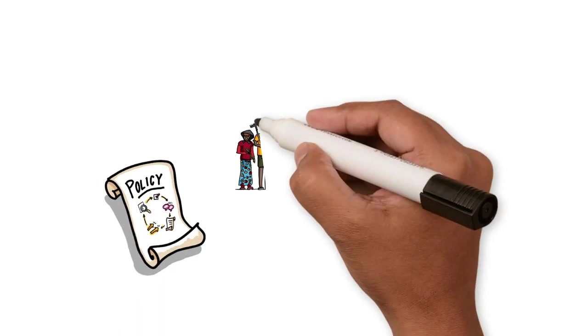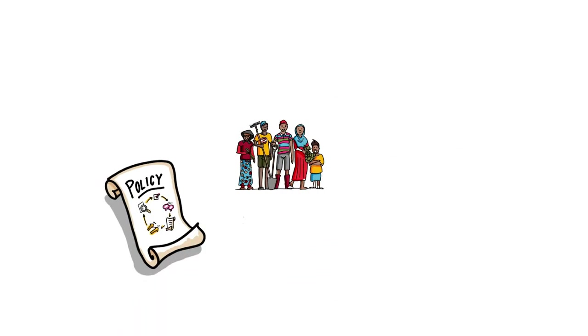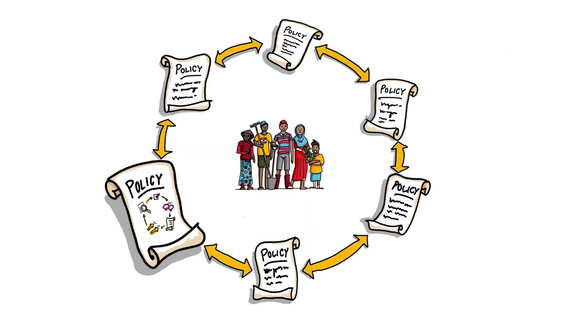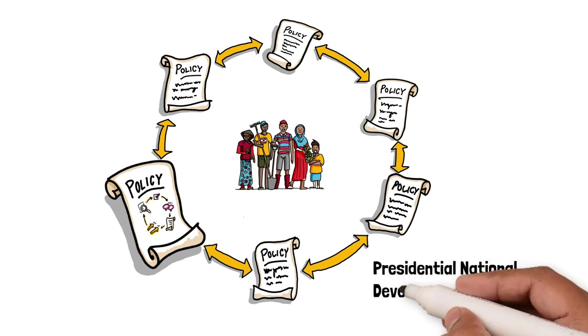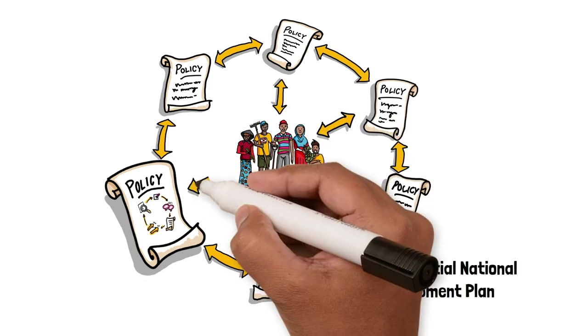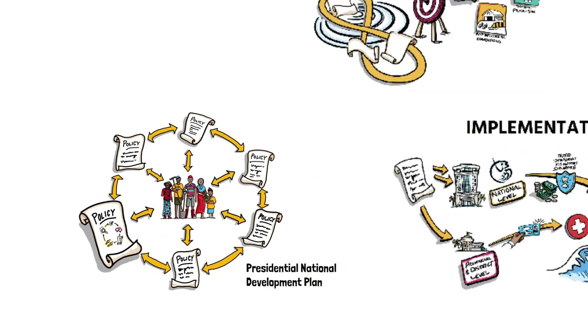The policy process for the support of fisherfolk in Indonesia takes into account and interacts with other policies and governmental regulations. For example, with the Presidential National Development Plan. All those policies together, in the end, will have a joint impact on the lives of fisherfolk.